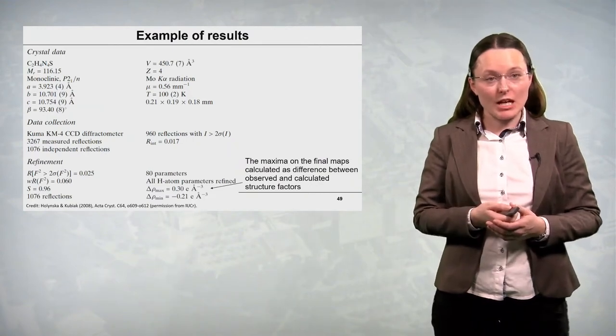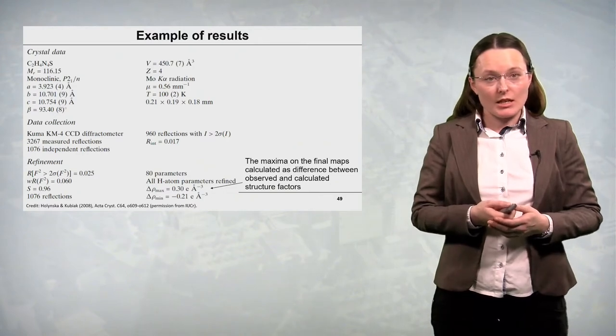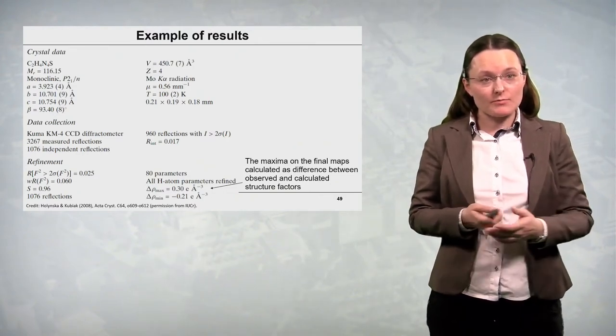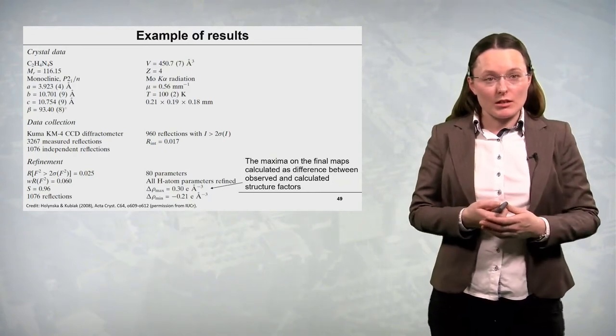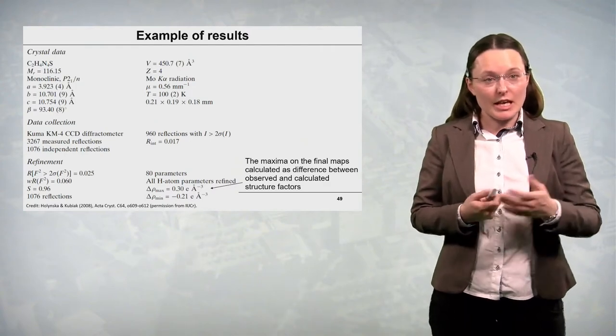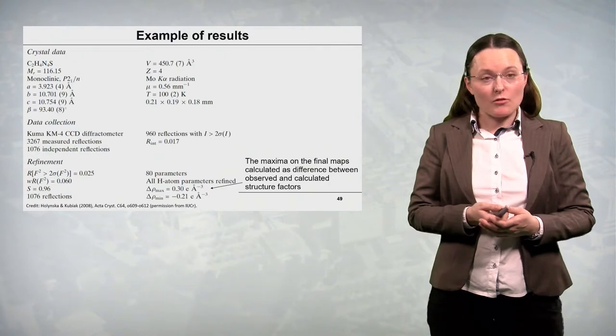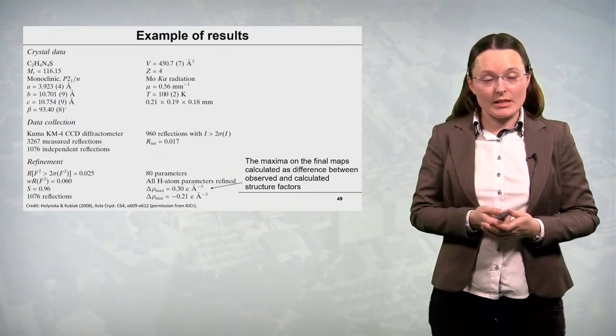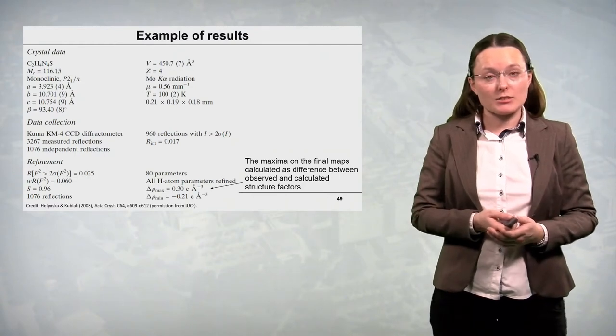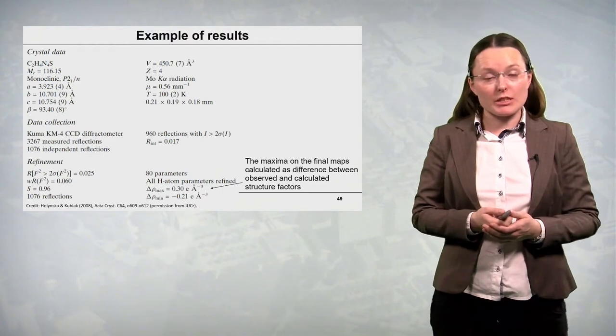At the end I quote some refinement parameters. The quality markers, R parameter, WR which is in the order of 2 times R coefficient, then the S function close to 1, the number of reflections used in the refinement, the number of parameters of structure refinement, then how hydrogen atom parameters were treated.